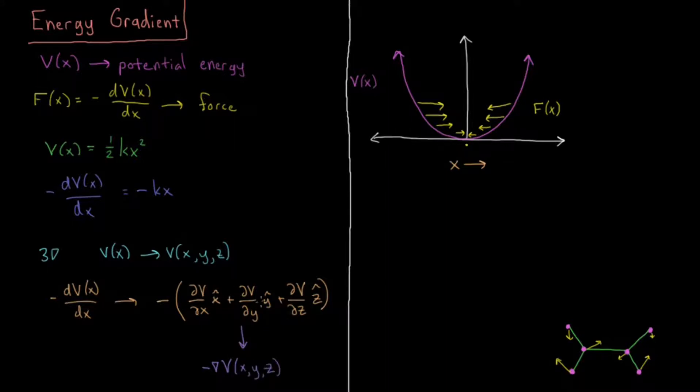So this gradient is actually a vector, so we're calling that the gradient vector. Or in this case, it's the negative gradient vector. So the negative gradient vector is the force vector that our three-dimensional particle feels.